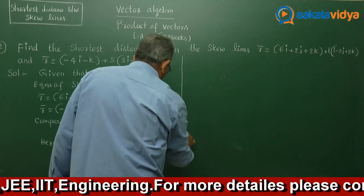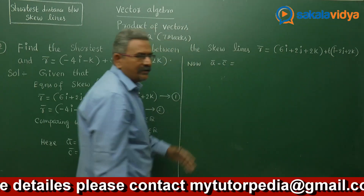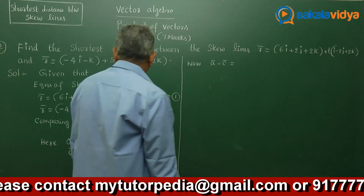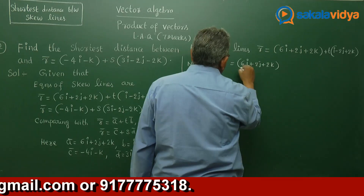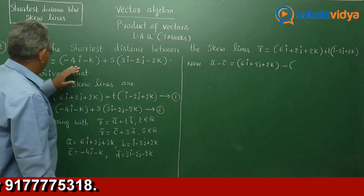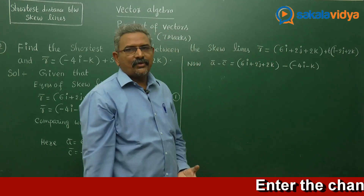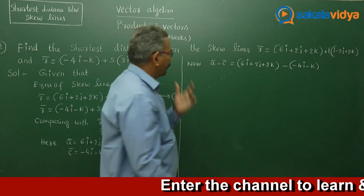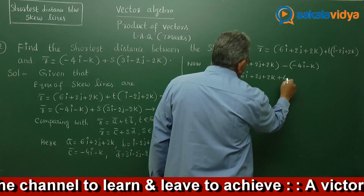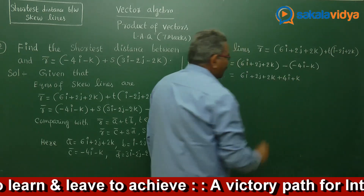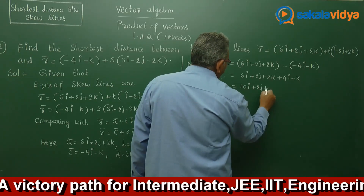Now, as part of our plan, let us find a bar minus c bar. That is: (6i plus 2j plus 2k) minus (minus 4i minus k). Simplifying: 6i plus 4i gives 10i, then 2j, and 2k plus k gives 3k. So a bar minus c bar equals 10i plus 2j plus 3k.